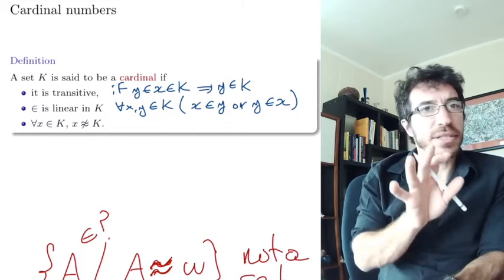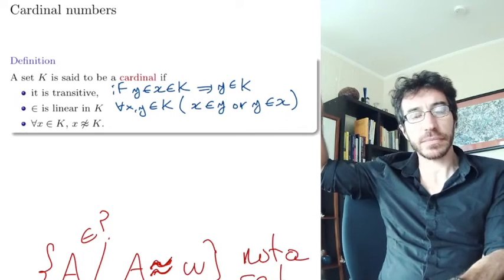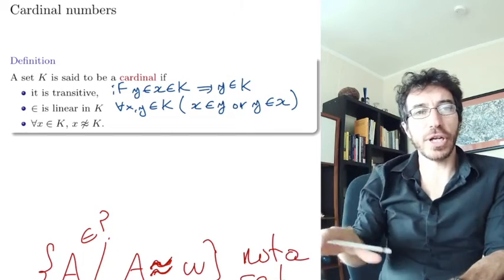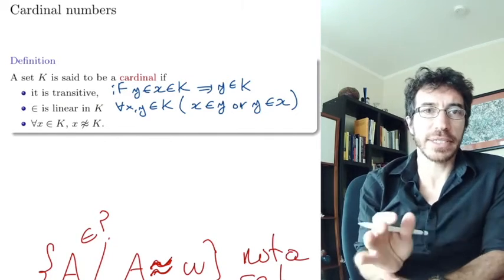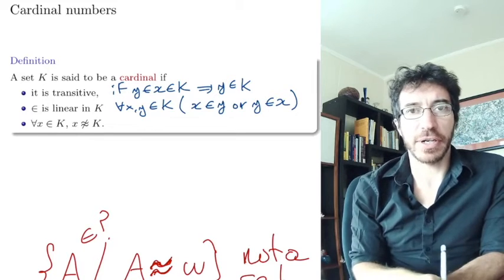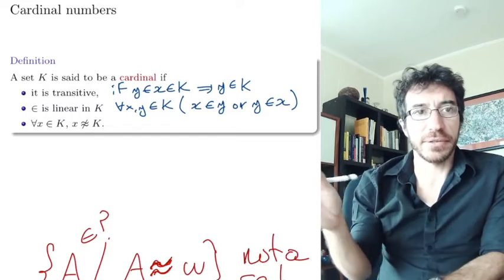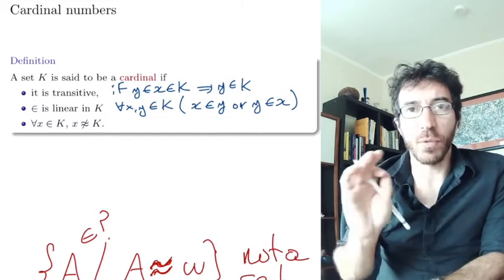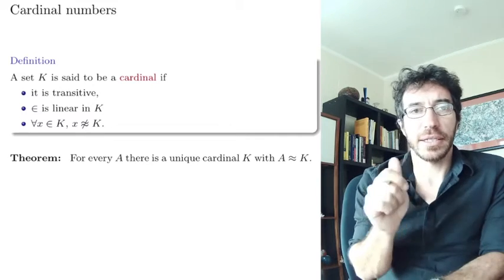Okay, so this is a definition of cardinal that we're going to see later on. So for now, let's just assume it's just some definition, some property. We are not going to use the particular properties of cardinals yet. A cardinal is just something that satisfies these properties.